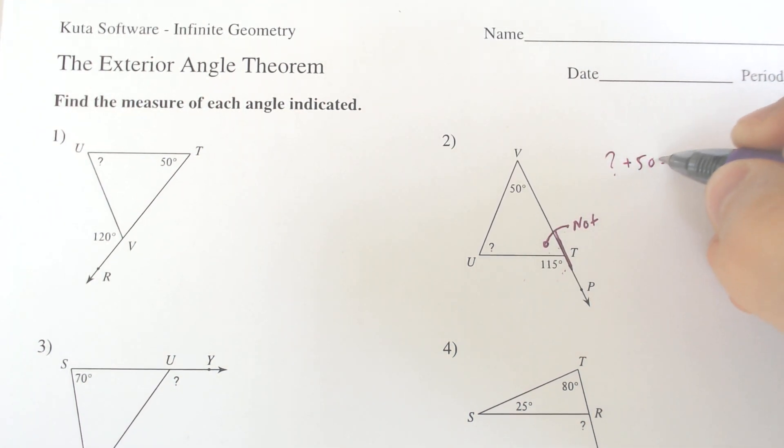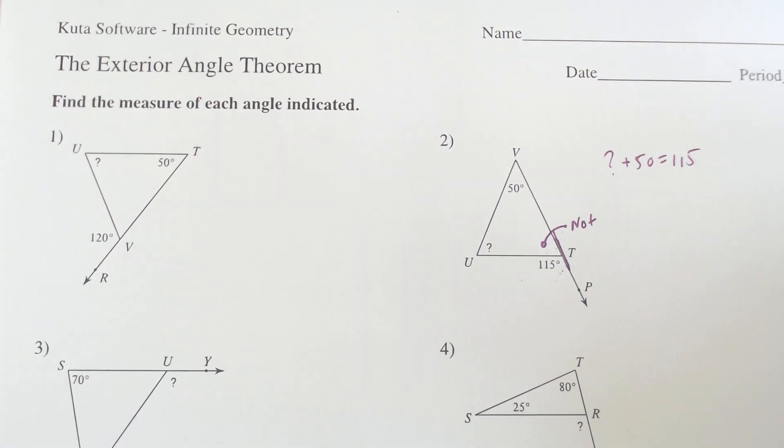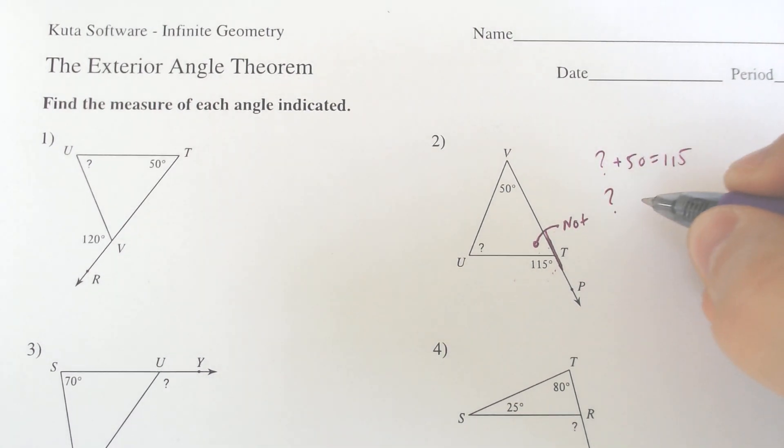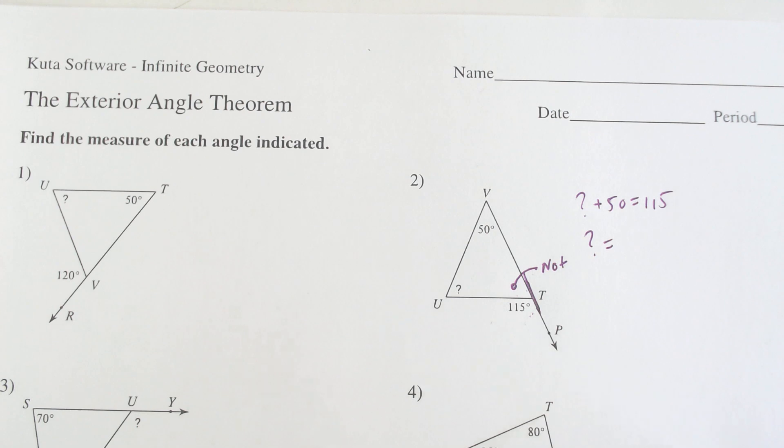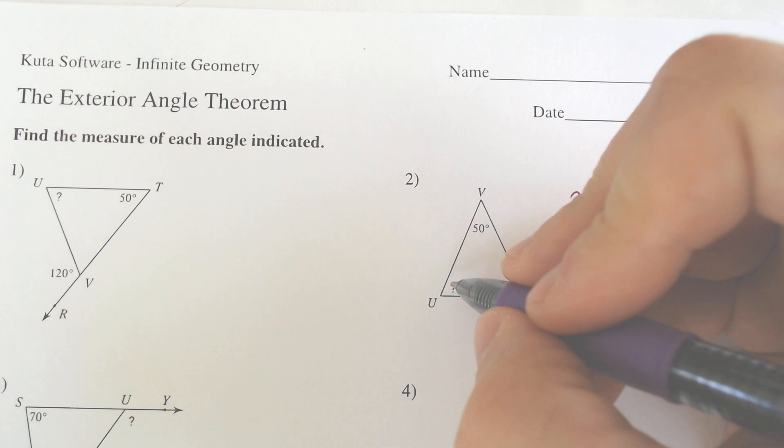If they are not a linear pair with it, then the question mark and the 50 will add to 115. So then you just solve. If you subtract 50 from the 115, you get 115 minus 50. We get 65 degrees for this angle right here.